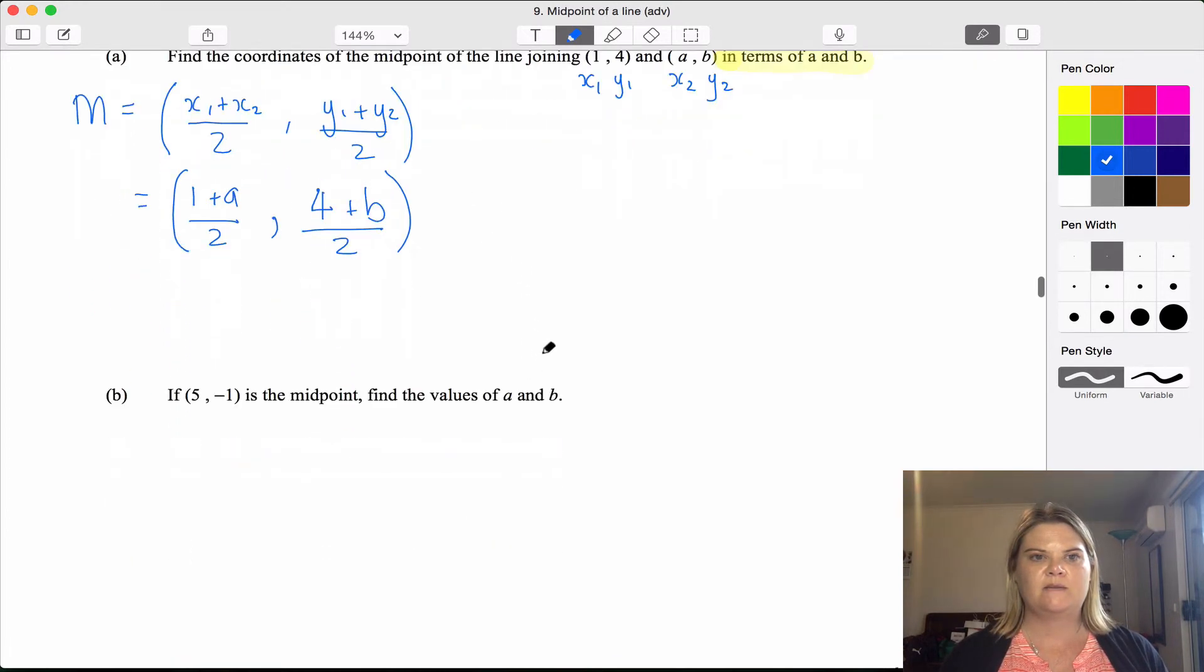Part b: if (5, -1) is the midpoint, find the values of a and b. So I'm going to highlight what the question is actually asking me: find the values of a and b, so when I come back at the end I can make sure I'm answering that question. So the midpoint is (5, -1), which is equal to (1+a)/2, (4+b)/2.